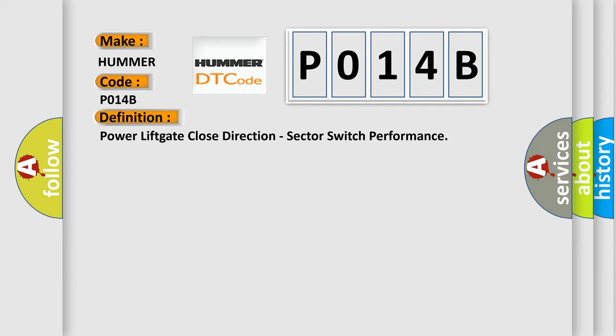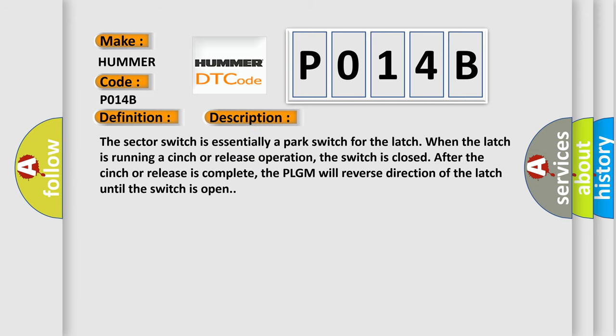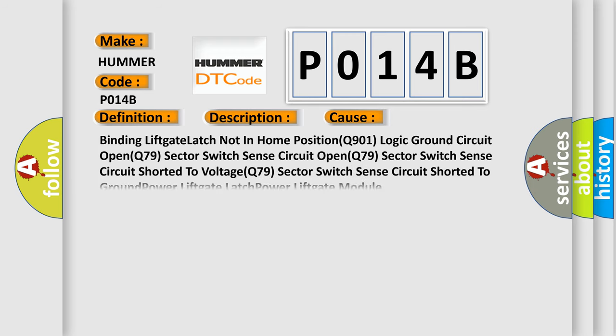Here is a short description of this DTC code. The sector switch is essentially a park switch for the latch. When the latch is running a cinch or release operation, the switch is closed after the cinch or release is complete. The PLGM will reverse direction of the latch until the switch is open. This diagnostic error occurs most often in these cases: binding lift gate latch not in home position, logic ground circuit open, sector switch sense circuit open, sector switch sense circuit shorted to voltage, sector switch sense circuit shorted to ground, power lift gate latch, or power lift gate module.